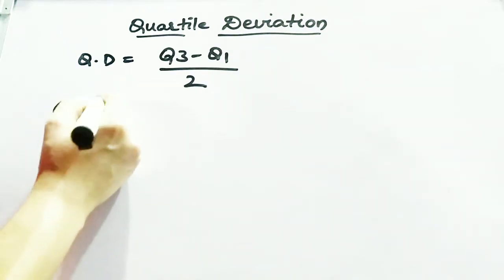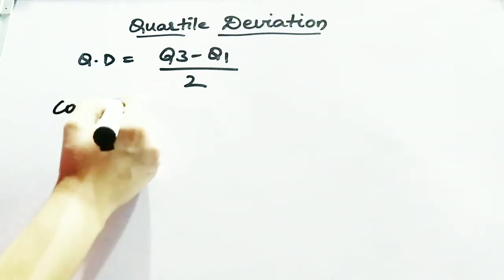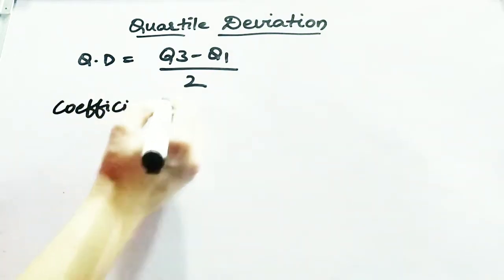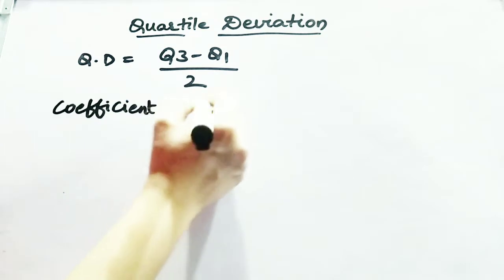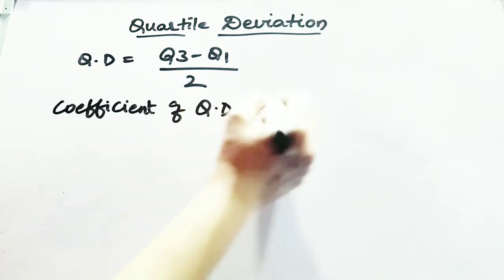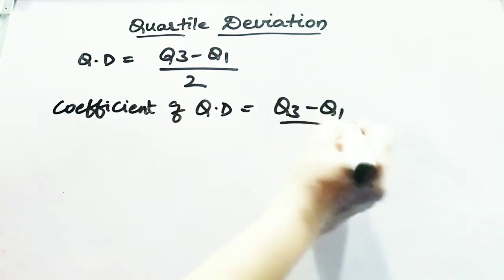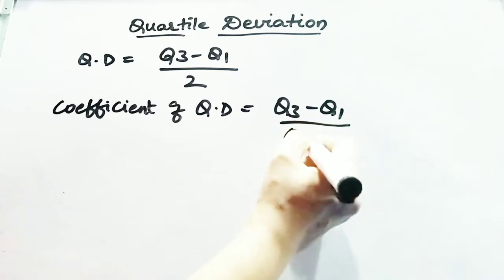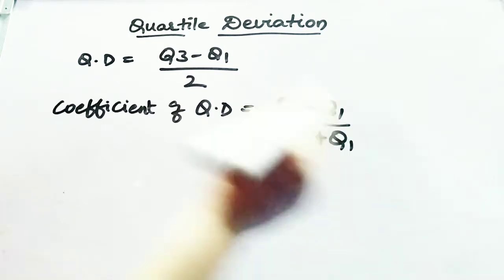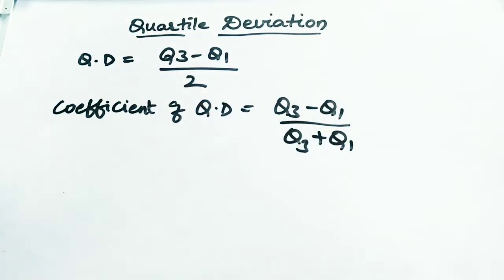What is the coefficient of QD? The coefficient of quartile deviation is Q3 minus Q1 by Q3 plus Q1. Using this deviation method, you have to solve individual series, discrete series, and continuous series.